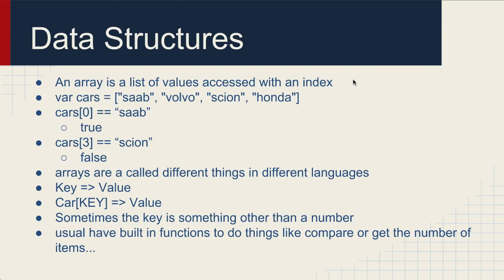An array is a data structure and specifically it's a list of values accessed with an index. That seems pretty confusing, but think of it like a row or column in a spreadsheet. Basically these are values in the spreadsheet and this is the array index. So how like in a spreadsheet you would access something in the first cell by saying A1, this you're saying cars[0] will return Saab. Cars[3] will not return Scion because it goes 0, 1, 2, 3. It will be Honda. So this would be false. Arrays are called different things in different languages.